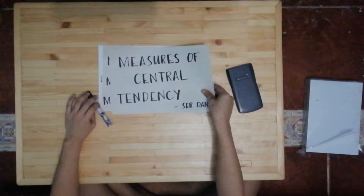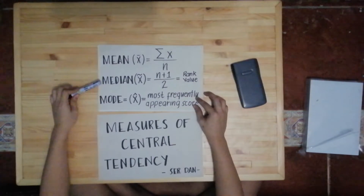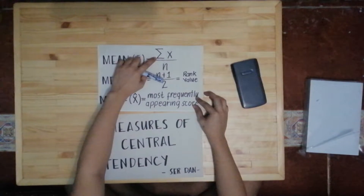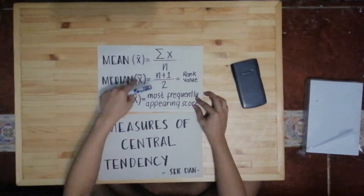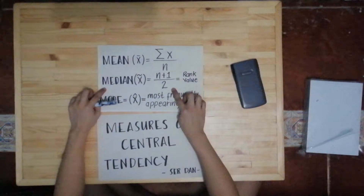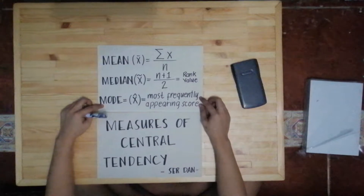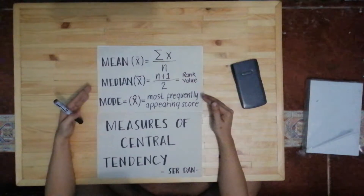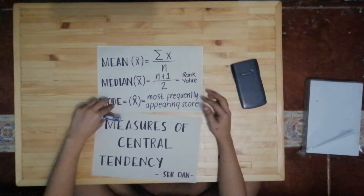So what are the measures of central tendency? We have the following terms: the mean, the median, and the mode. For the mean, we have the symbol x-bar, with the formula equals summation or sigma of x all over n. The median is x-tilde, equals n plus 1 over 2. The mode is x-hat, and it has no formula — we just look at the most frequently appearing score.